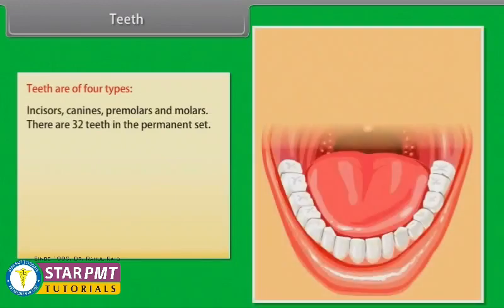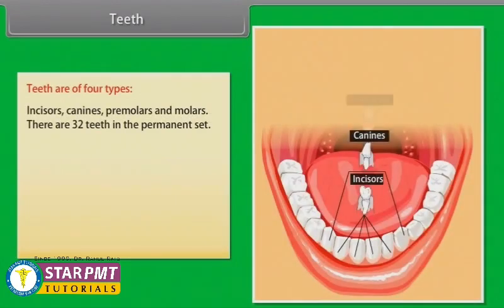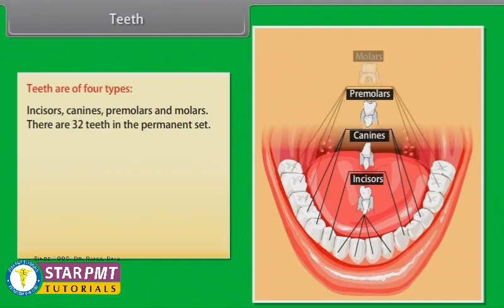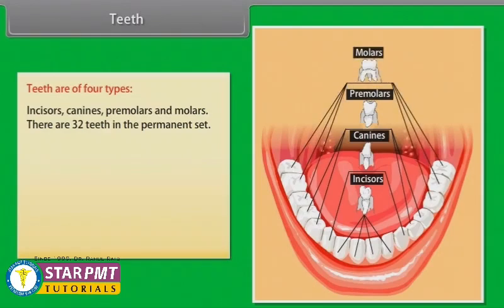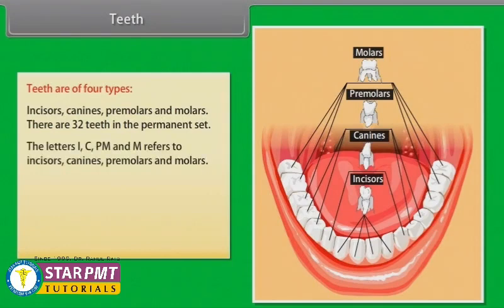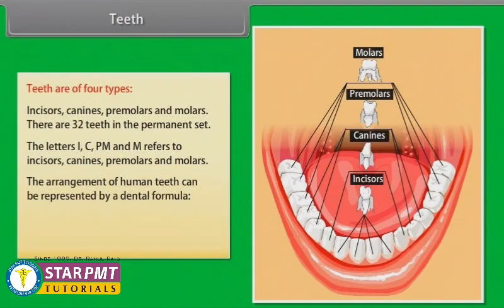The four types of teeth are incisors, canines, premolars, and molars. There are 32 teeth in the permanent set. The letters I, C, P, and M refer to incisors, canines, premolars, and molars. The arrangement of human teeth can be represented by a dental formula.